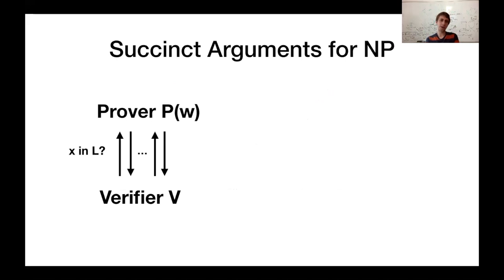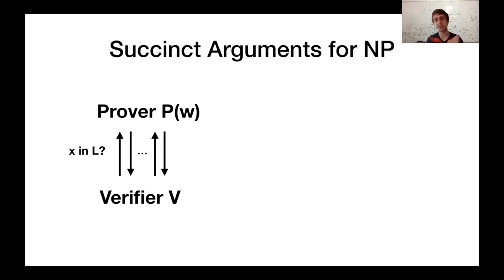To start off, I want to talk about the notion of succinct arguments for NP, which have been studied for quite a while now. These are protocols where there's a prover who is interacting with a verifier for some statement x and whether or not it's in the language L. Because this is an NP statement, we provide the prover additionally with some witness helping it prove this fact.